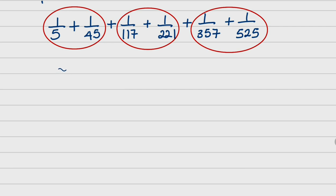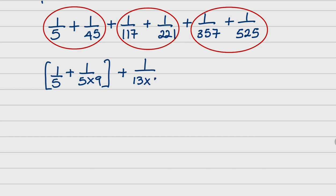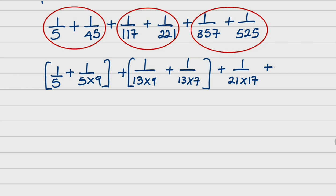You see, the first set can be written as 1 over 5 plus 1 over 5 times 9. The second one can be written as 1 over 13 times 9 plus 1 over 13 times 17. So we have this. Then the last set can be written as 1 over 21 times 17 plus 1 over 21 times 25. That is exactly what I meant earlier on.